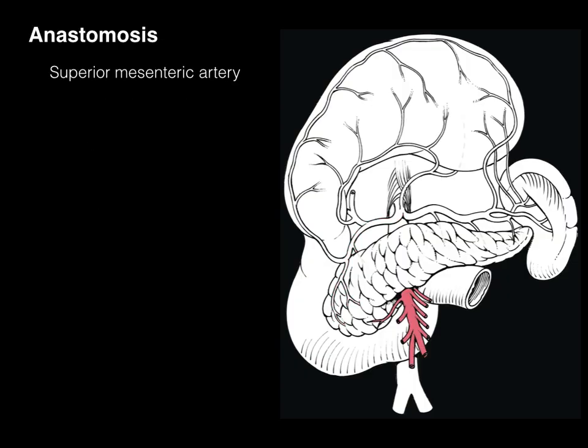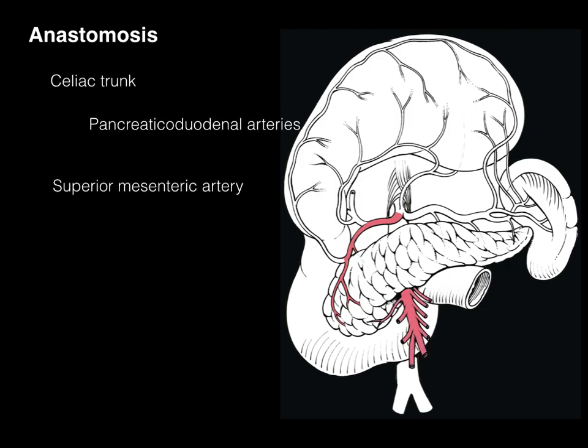Anastomosis refers to where two blood vessels come together. The superior mesenteric artery is highlighted in the picture. The celiac trunk gives rise to the gastroduodenal artery and then the superior pancreaticoduodenal artery, and even though the illustration doesn't show it, those two branches from the superior mesenteric artery and the gastroduodenal artery come together. This is clinically important so that if a blockage occurs, you can get collateral blood supply between the foregut and midgut arteries.